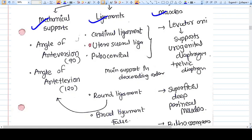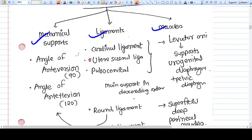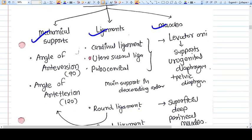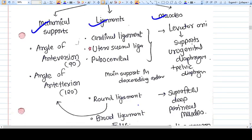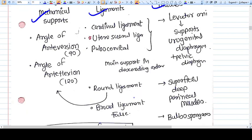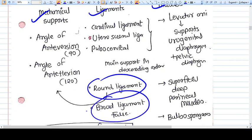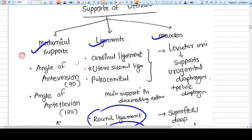The ligaments - we have already discussed the cardinal, uterosacral, and pubocervical ligament. There are other ligaments too, but they are not the main supporters, like round ligament or broad ligament. Broad ligament actually does not support the uterus at all.